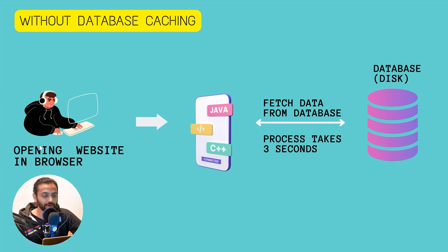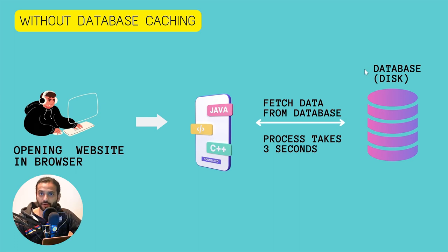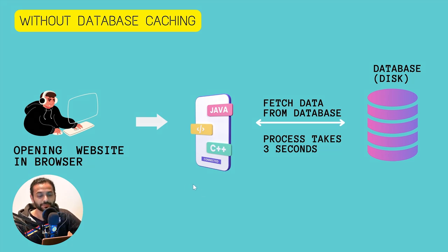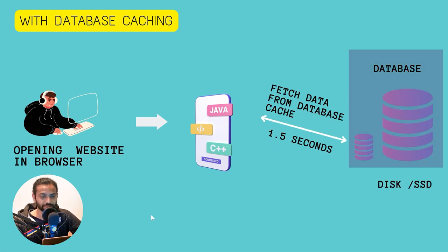When somebody opens your website in the browser, they make a request. The code on the website processes it — let's say that takes three seconds — and your database is on disk, like a hard drive. For those who don't know, a server is also like a computer: it has RAM and a hard drive, just with different specifications and operating system. So when somebody requests the website, the code and database take three seconds to process everything and return a response to the user.